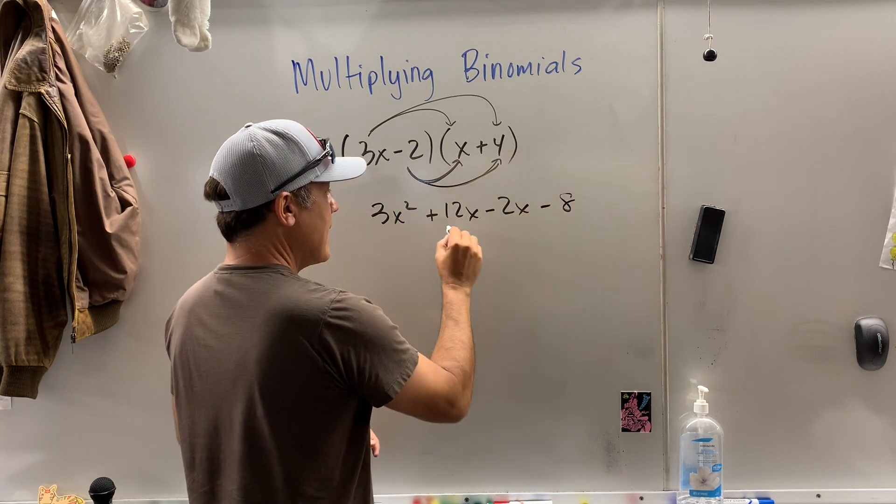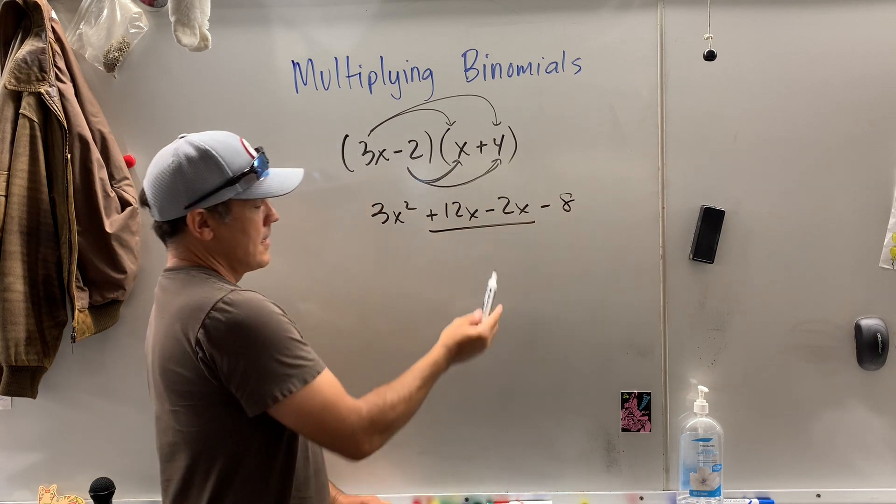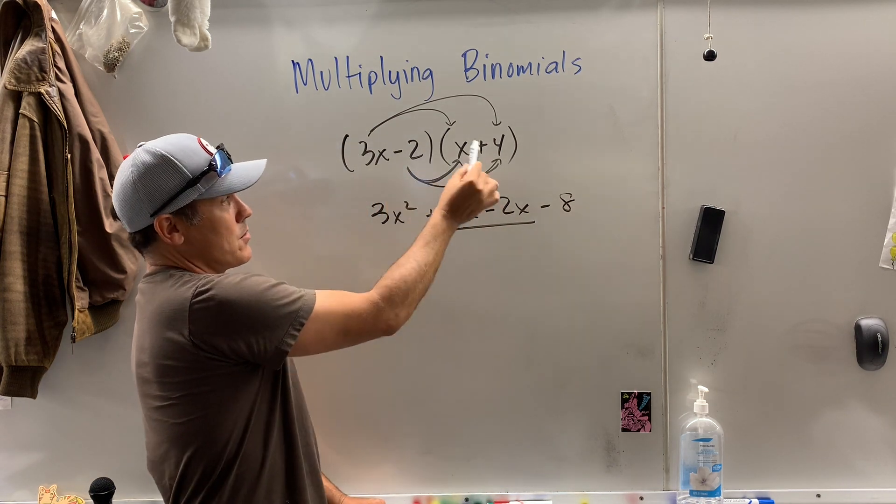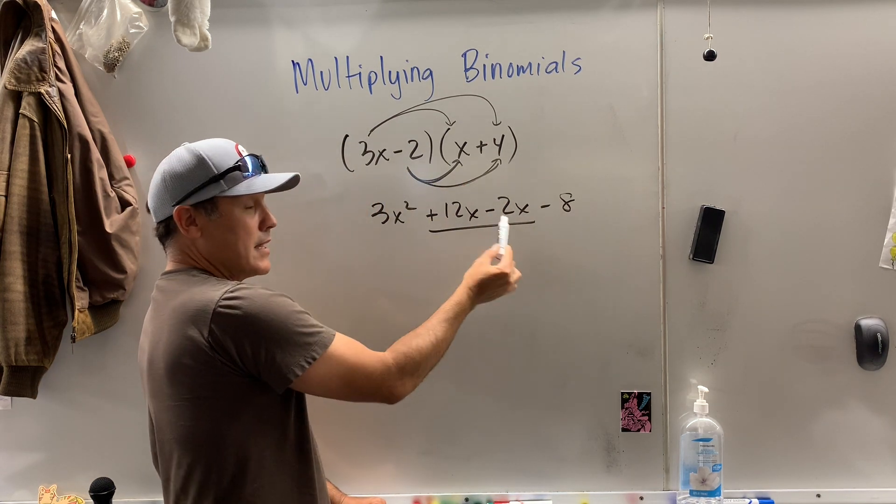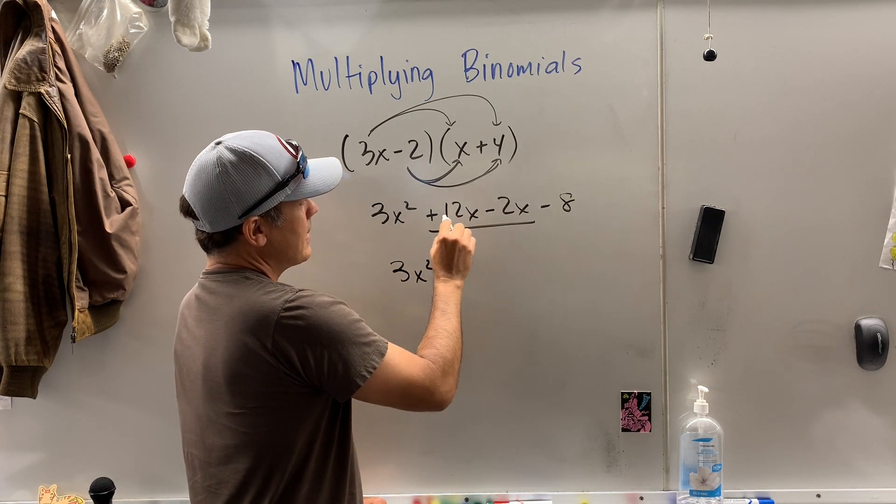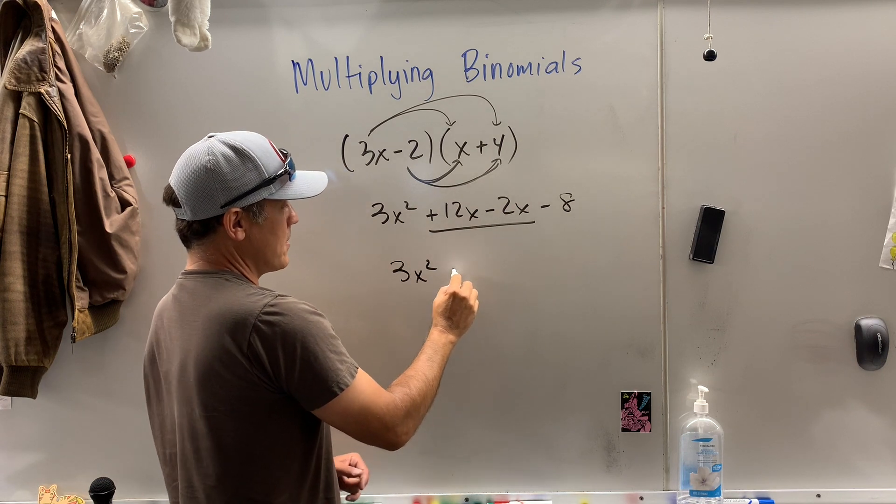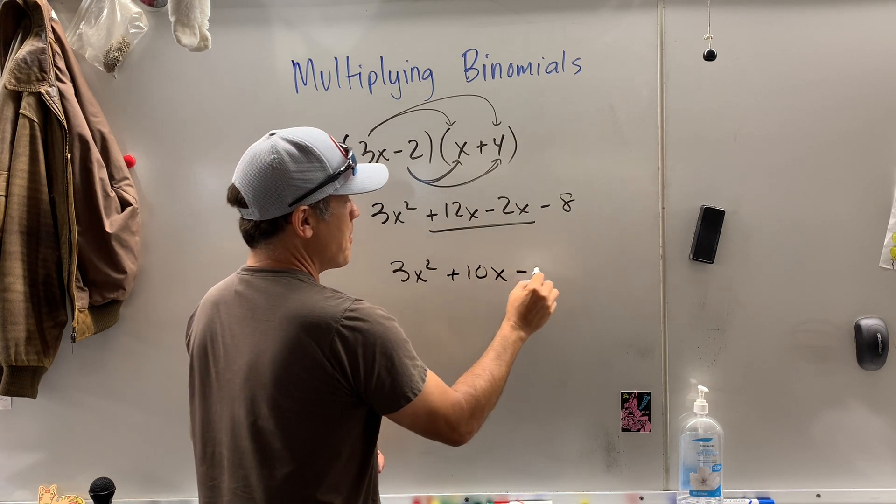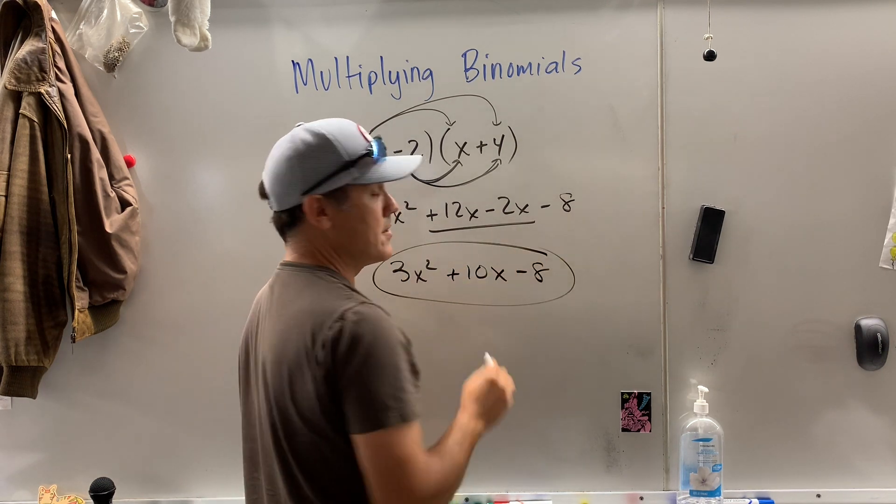And 9 times out of 10 you're going to be able to, well in this situation you'll always be able to combine the inner terms here. So we have 3x squared, 12x minus 2x is 10x minus 8, and that my friends is how you multiply binomials.